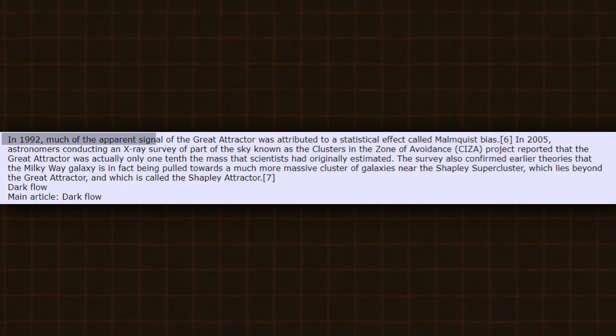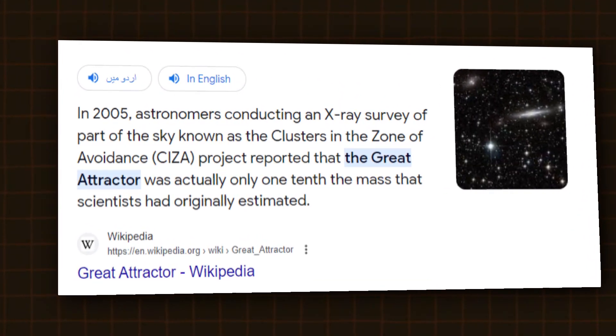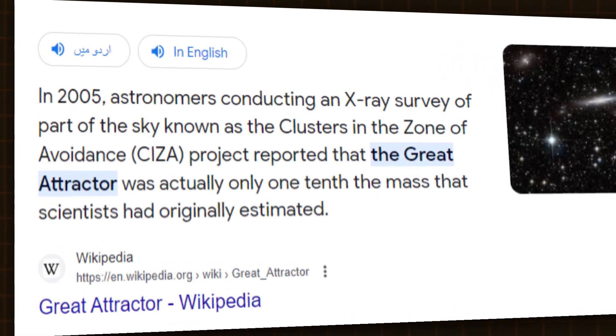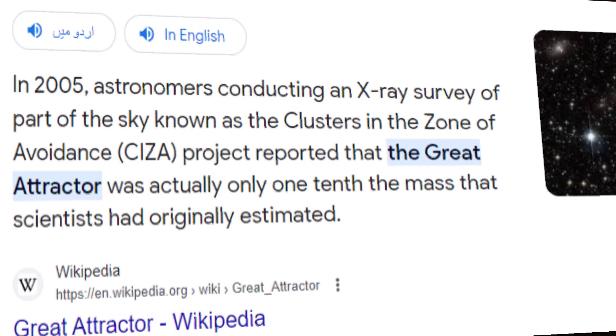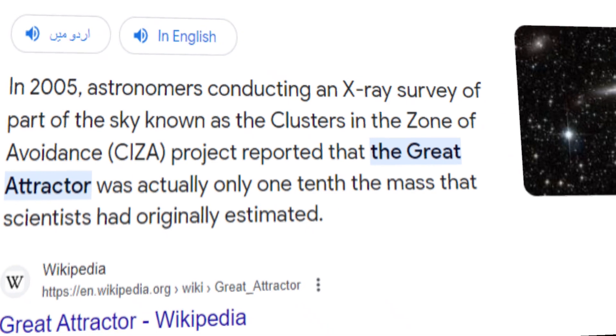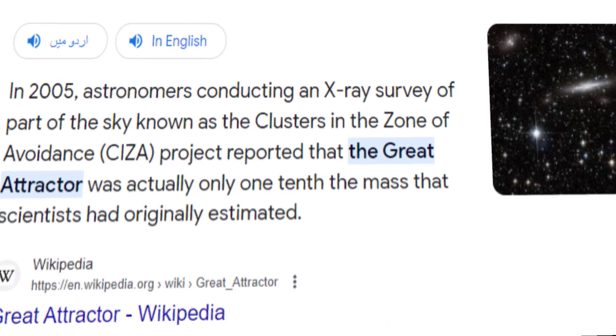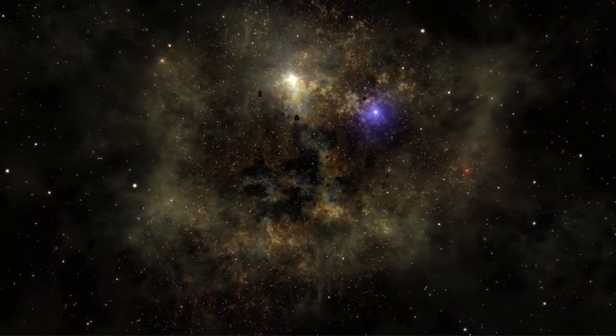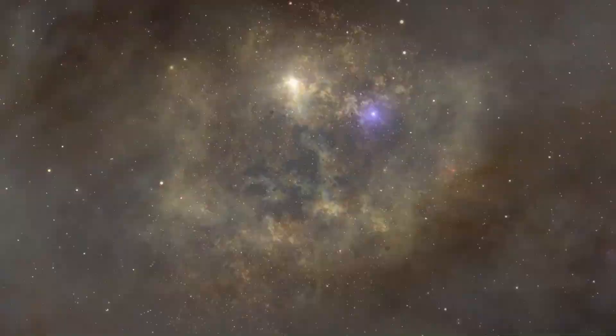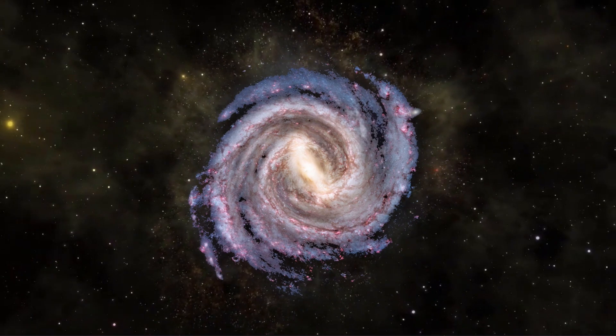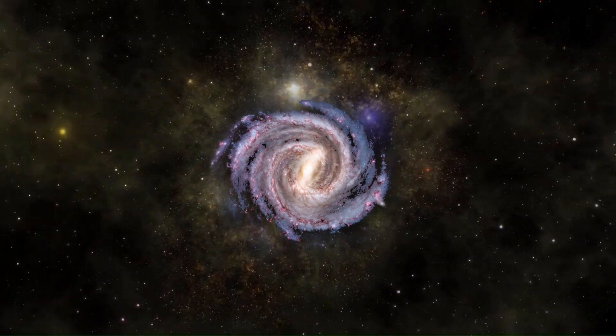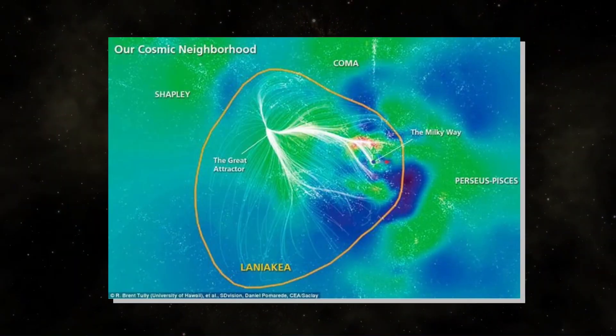In 1992, most of the apparent signal of the Great Attractor was attributed to a statistical effect called Malmquist bias. It was in 2005 when astronomers conducted an X-ray survey of part of the sky known as the Clusters in the Zone of Avoidance Project. The project reported that the Great Attractor was only one-tenth the mass of the original estimate by scientists. The survey also confirmed earlier theories that the Milky Way galaxy is being pulled toward a much more massive cluster of galaxies close to the Shapley Supercluster, which exists beyond the Great Attractor, and which is called the Shapley Attractor.